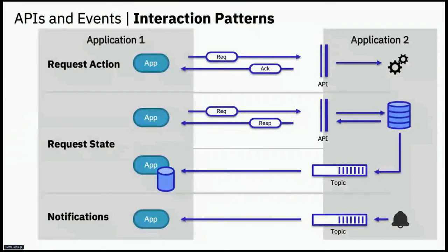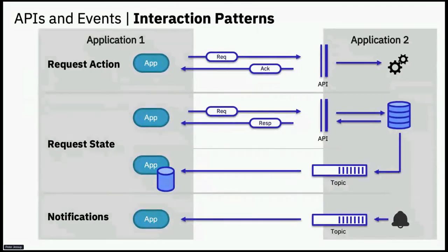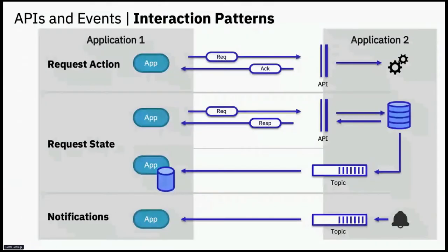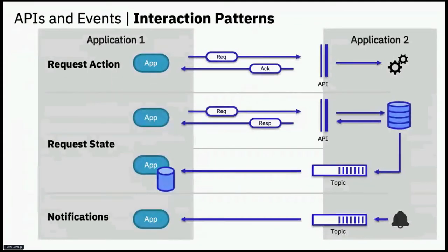Let's look at the final interaction pattern — notifications — which is about telling you when something has happened. For example, tell me when a new order is placed or when a new customer is created. You may want to perform some action based on that event, such as enrolling the new customer in a marketing campaign. That type of notification pattern is probably the cornerstone for automating an organisation. Notifications are, by their very nature, event-driven, and there is a drive toward using notifications in business processes and building applications or microservices which can react to what is happening in an organisation.